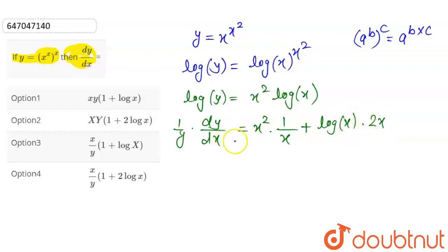Now, if you want to find dy by dx, this dy by dx will be here. This y is called on the RHS. If y is on RHS, the value of y is written here: x to the x square.